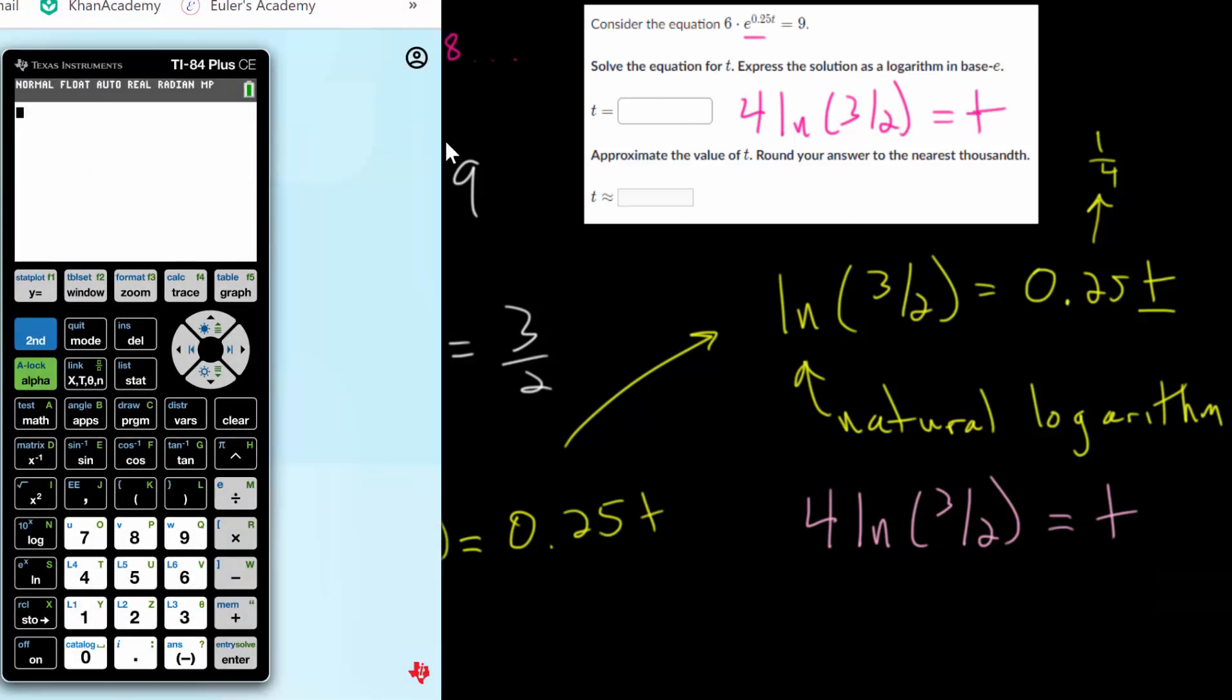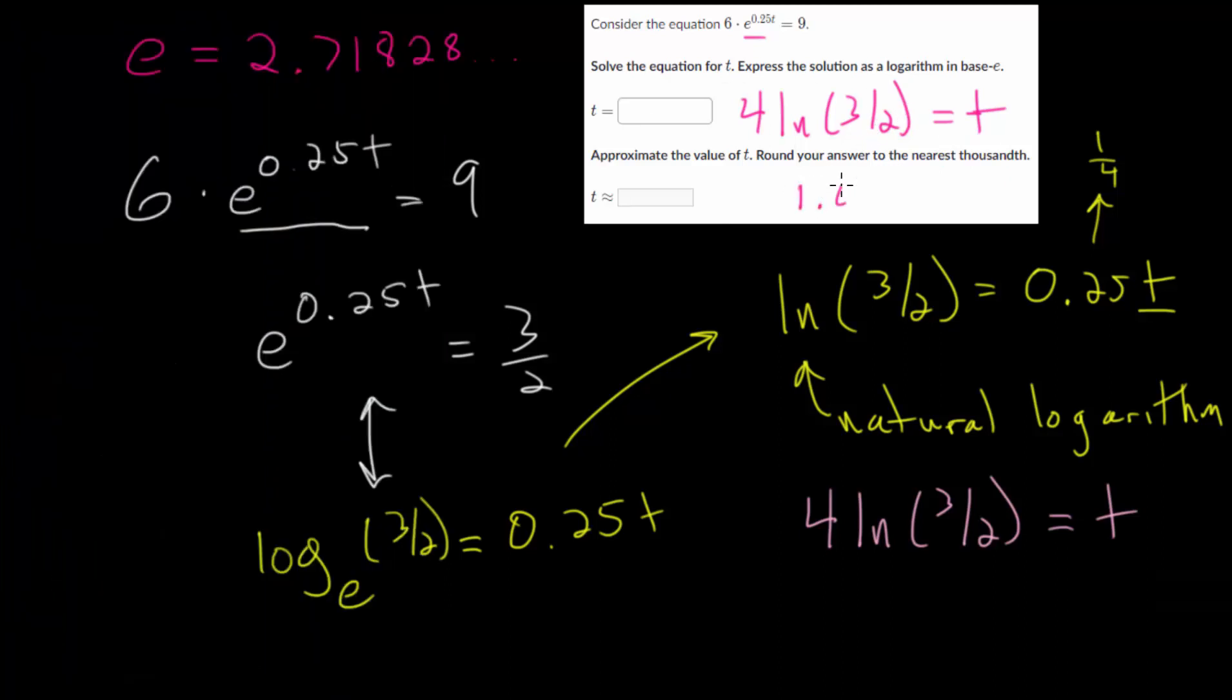And for this one, let me just clear everything. We have 4 natural log of 3 halves, which is really just 1.5. And we get 1.622 if we're going to round to the 1,000th place. So 1 is the 1,000th place, but 8 is bigger than 5. So we round up. So we get 1.622.